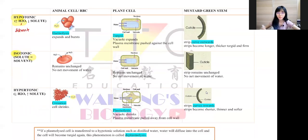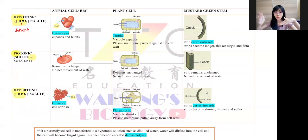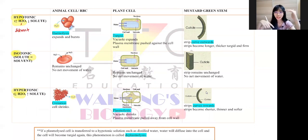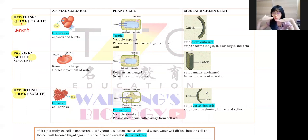Hypertonic means lesser water, and lesser water means more solute. I'm going to use water as my reference point because it's easier. So remember: hypo means more water, hyper means lesser water, and iso means equal.